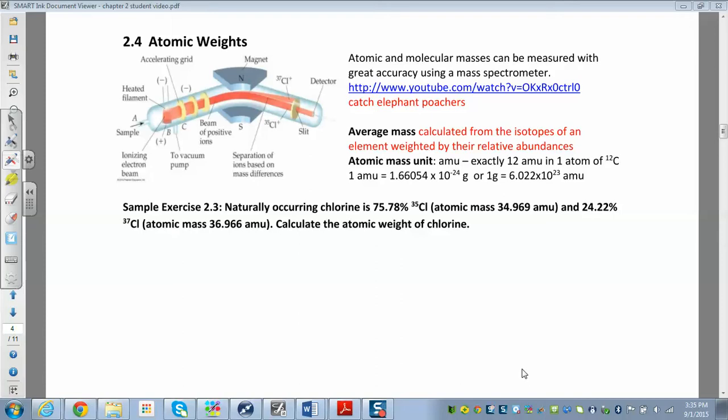Atomic and molecular masses can be measured using something called a mass spectrometer, and there's a video that explains in much more detail how this particular instrument works. But the general idea is you put your sample in over here, you ionize it,